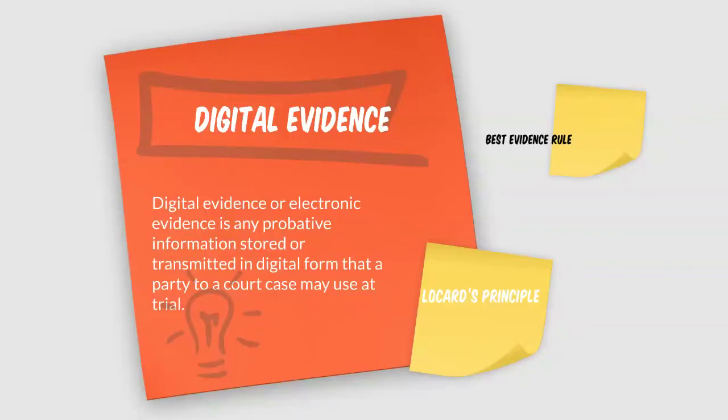Some of the information stored in a victim's system that can be potential digital evidence includes: IP address, system login and remote login details, browsing history, log files, emails, images, etc.